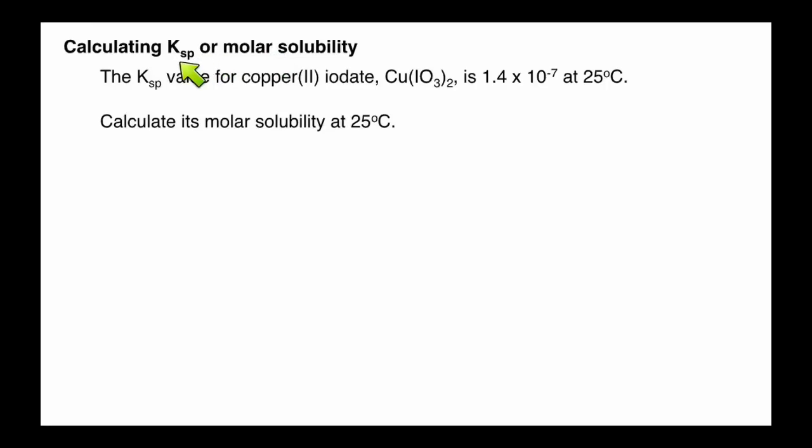You could be asked to solve for the Ksp or the molar solubility. In this particular one, we're going to calculate the molar solubility given the Ksp value. The Ksp value for copper(II) iodate, Cu(IO3)2, is 1.4 times 10 to the negative 7th at 25 degrees Celsius.